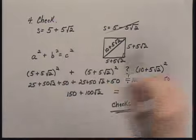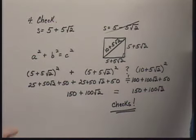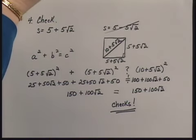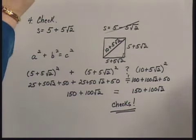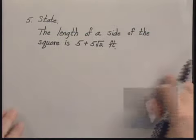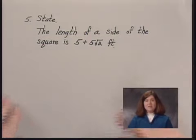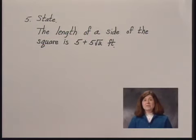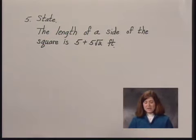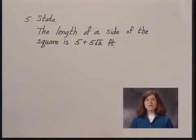We have a solution. The length of a side of the square is 5 plus 5 times the square root of 2 feet.